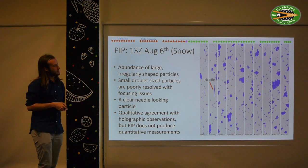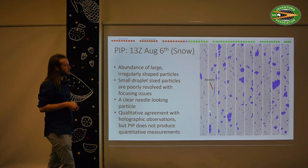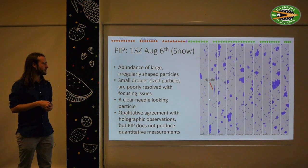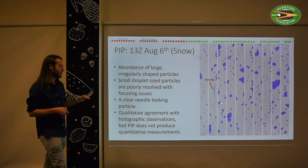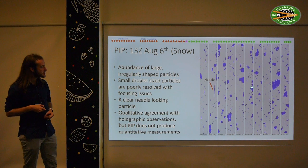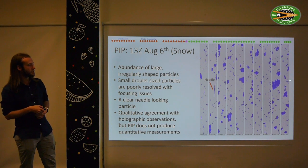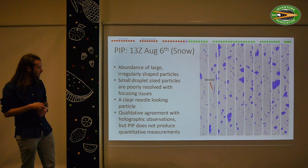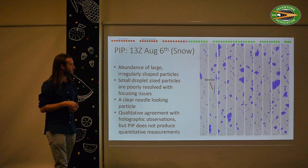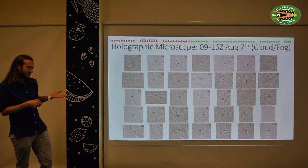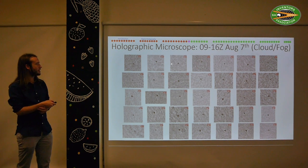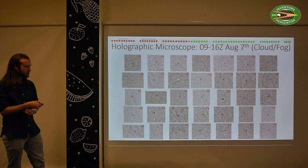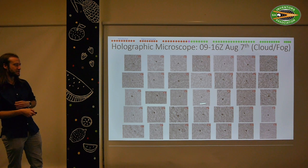We can independently confirm this by looking at the 2D PIP imager. It doesn't give us 3D or quantitative information, but it does broadly agree — we see irregular shaped particles and the odd needle particle. For cloud events, we then expect to see spherical water droplets, but much smaller in size. This gives us a way to try to discriminate between these different event types.